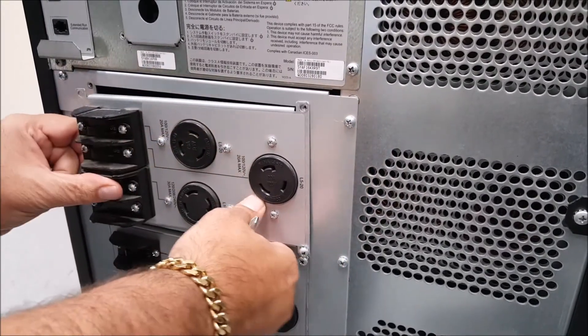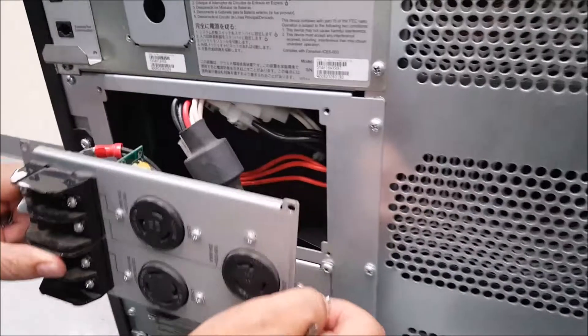Once you've removed all four screws from the PDU panel, you'll want to make sure you carefully remove it in order to expose the wiring harness.